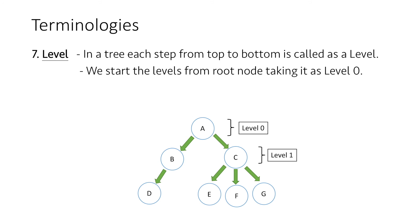Moving forward, nodes B and C are at level 1, and nodes D, E, F, and G are at level 2.